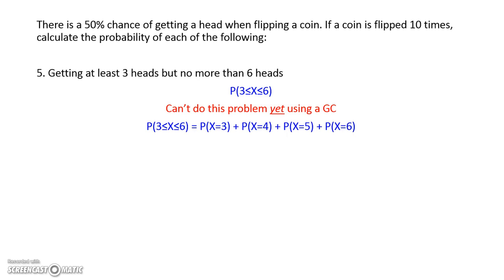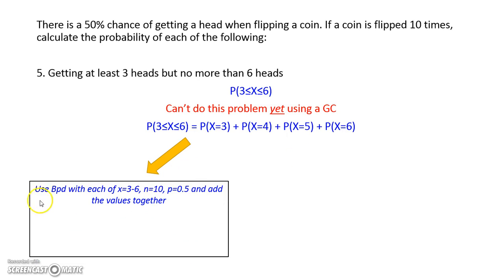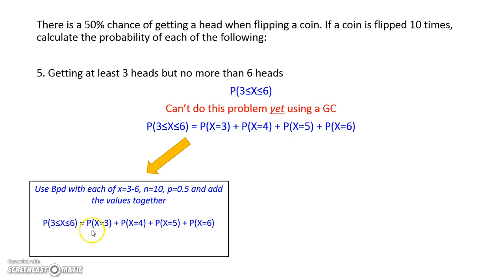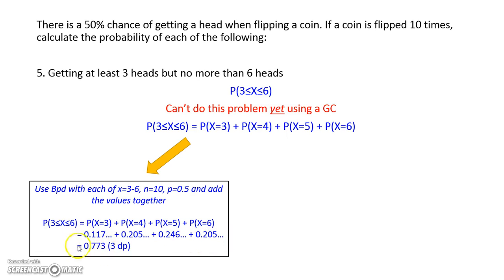There are two ways to tackle this problem. The first way uses BPD. We have probabilities with equal signs, so we can find each probability in turn and add the values together. Using BPD, we find the probability of x equal to 3, then 4, then 5, and 6, as shown here, and add them together to get 0.773 to 3 decimal places.